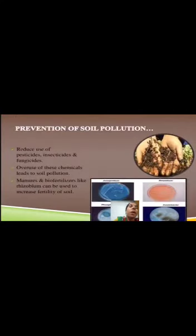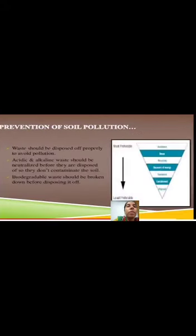Prevention of soil pollution — how to control and prevent soil pollution. Reduce use of pesticides, insecticides and fungicides. Overuse of these chemicals leads to soil pollution. Manure and bio-fertilizers like rhizobium can be used to increase fertility of soil.